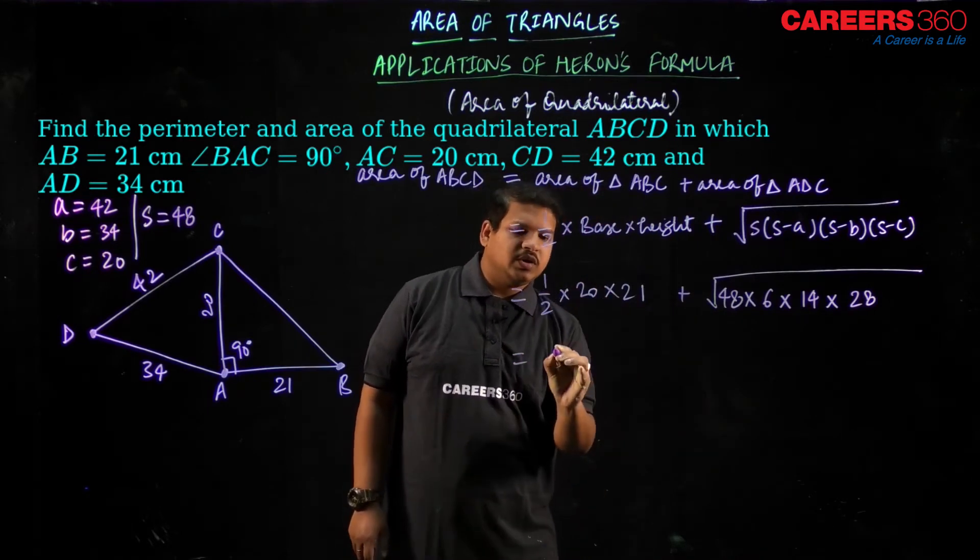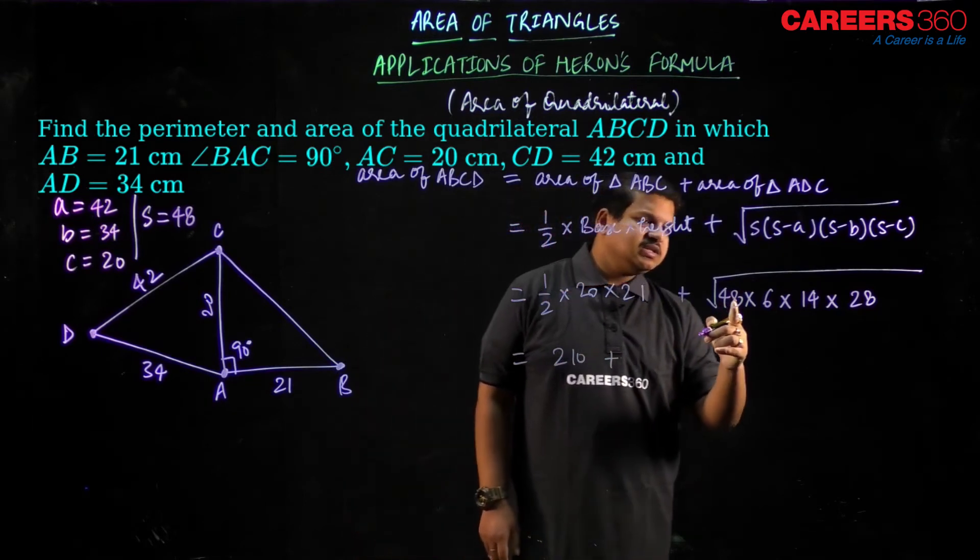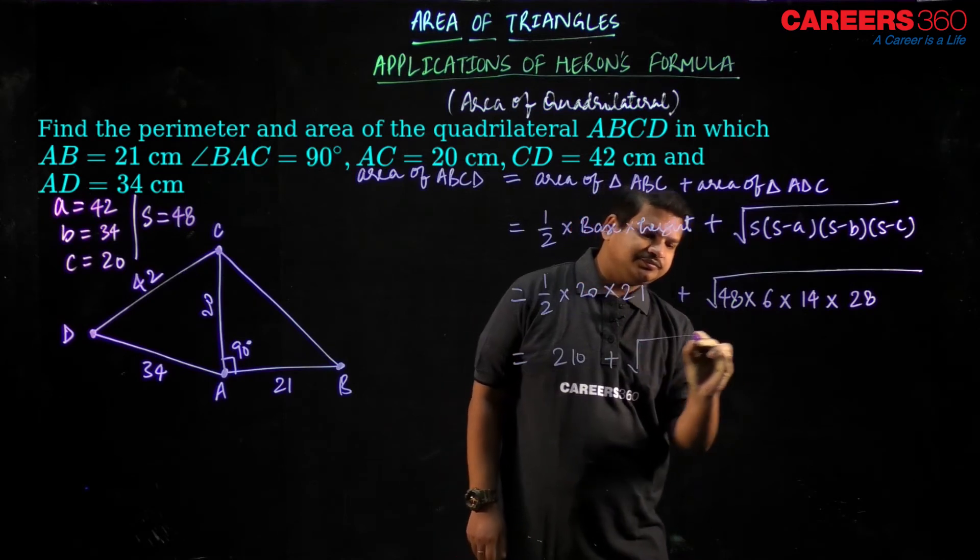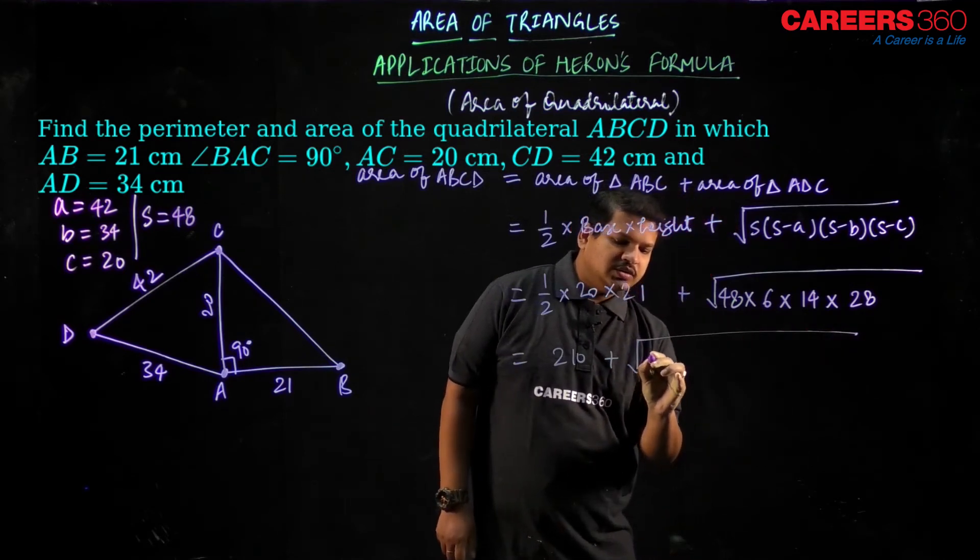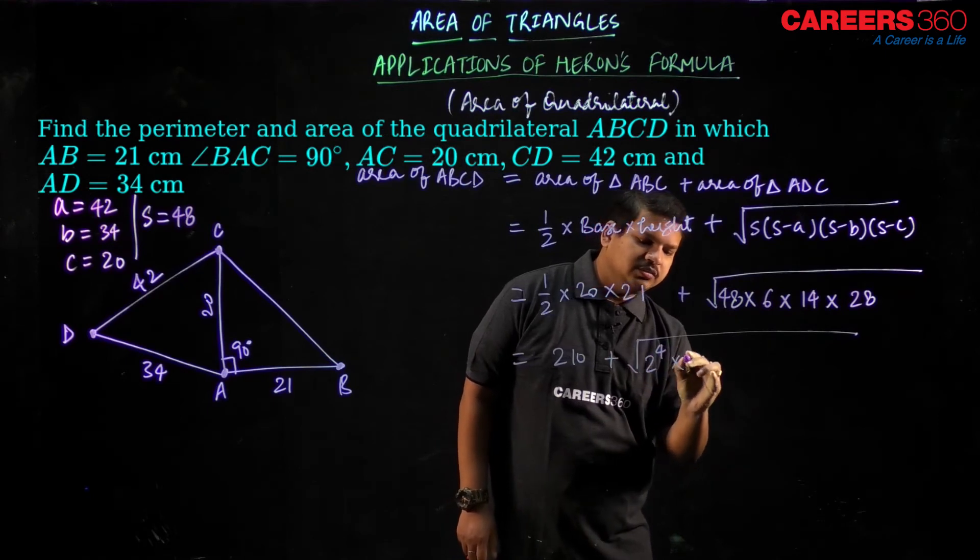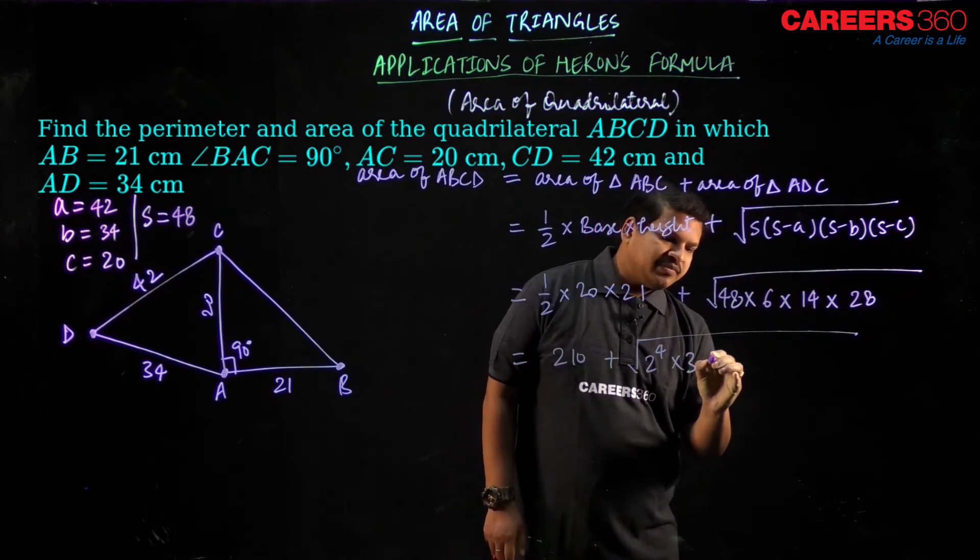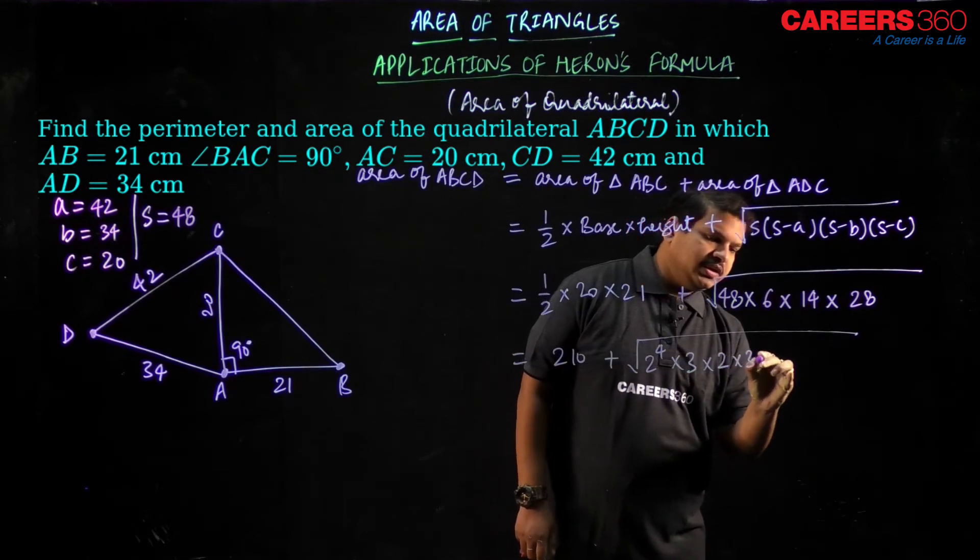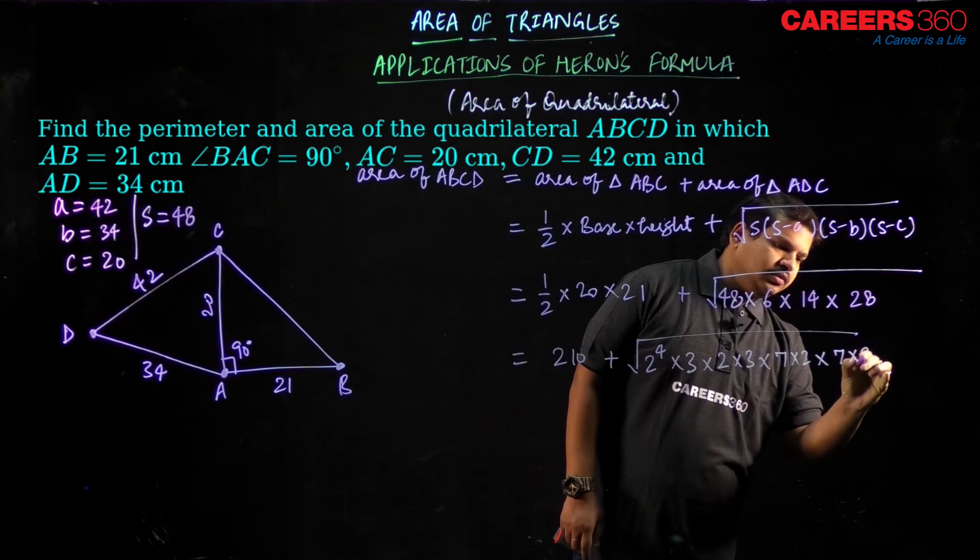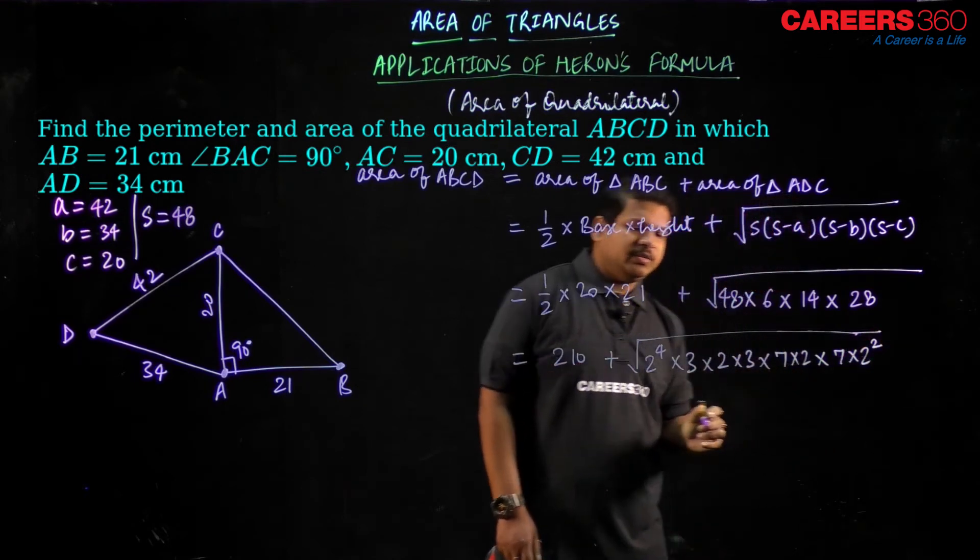This can be written as what? This will be 210 plus, this 48 can be written as what? 16 threes are 48. So 2 to the power 4 into 3 into 2 into 3 into 7 into 2 into 7 into 2 into 7 into 2 square. I hope it makes sense.